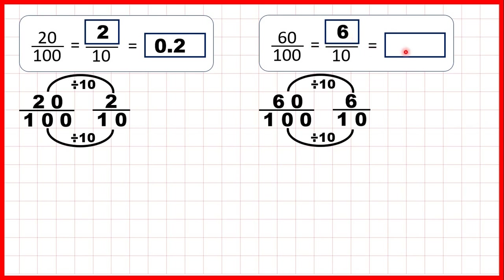If we're writing this as a decimal we could write 0.60, because that's 60 hundredths. The denominator of 100 tells us that we need to use two places after the decimal point, but if there's a zero on the end of a decimal we don't need it — we can just write 0.6. We've seen that because 60 hundredths is equal to 6 tenths, and the first digit after the decimal point is our tenths digit.